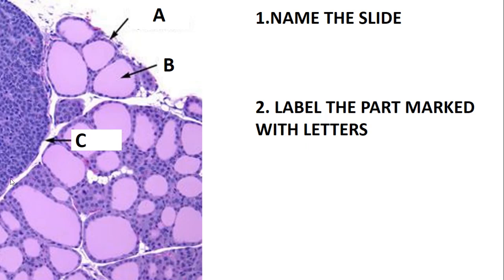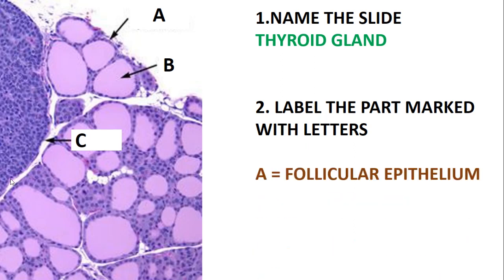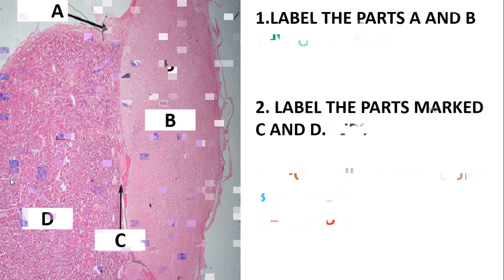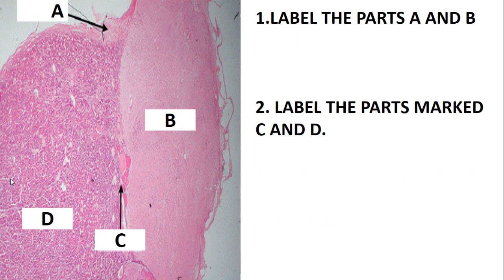This slide contains both the thyroid gland and the parathyroid gland, but the part we are most focused on is the thyroid gland. Label the parts marked with letters: A is the follicular epithelium, B is the colloid, and C is the capsule.